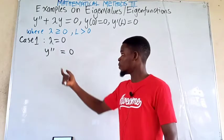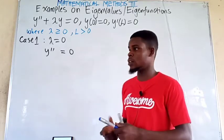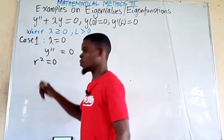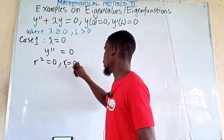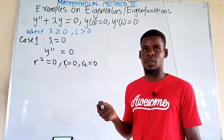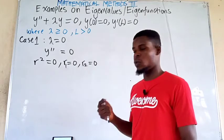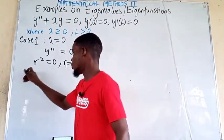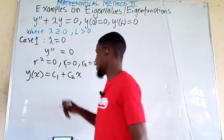We convert this into its characteristic equation in terms of r. We get r squared equals 0, which gives us r can be 0. So r1 equals 0 and r2 equals 0 — we have real but equal roots. Since the repeated root is 0, we assume a solution of the form y of x equals c1 plus c2 times x.